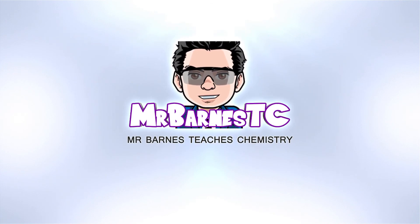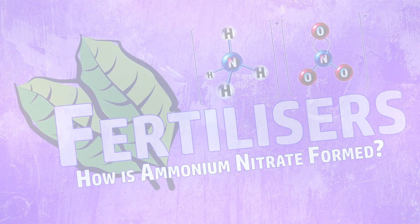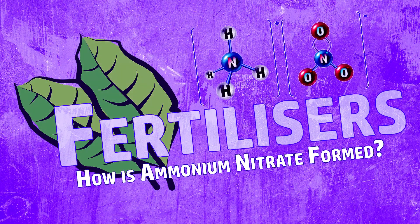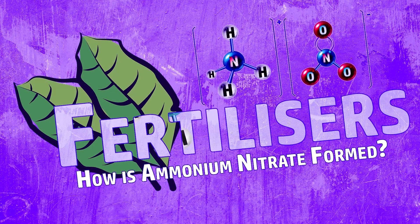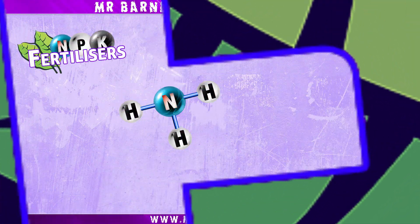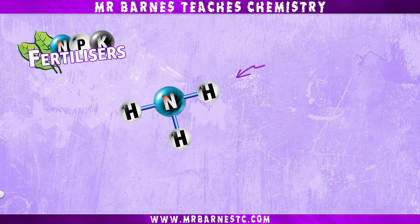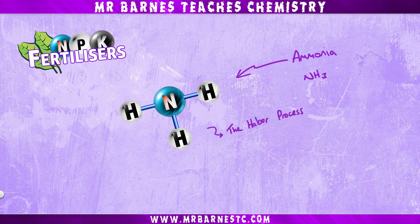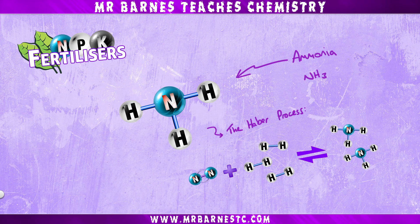Hi guys, welcome to this video looking at how ammonium nitrate is formed. The key thing for all nitrogen-based fertilizers such as ammonium nitrate is they need ammonia NH3, which is formed by the Haber process, where nitrogen N2 and hydrogen 3H2 react together to form ammonia 2NH3 in a reversible reaction.